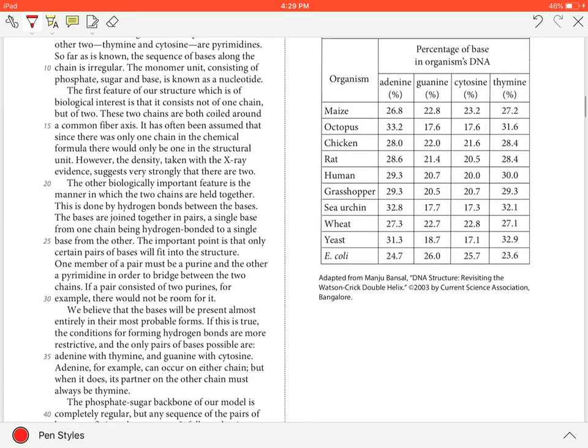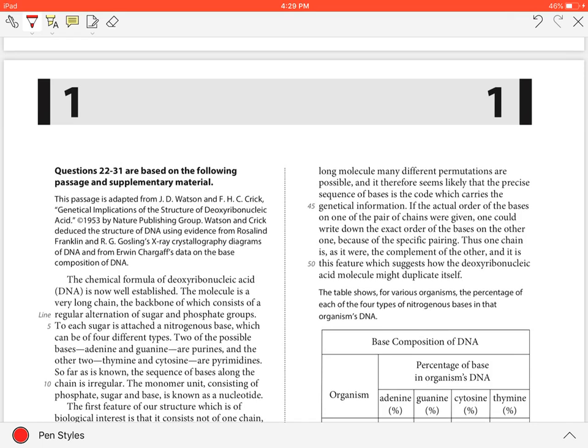In lines 43-44, the authors explain how the DNA molecule contains a precise sequence of bases, and that the authors can use the order of bases on one chain to determine the order of bases on the other.